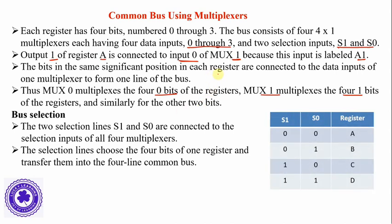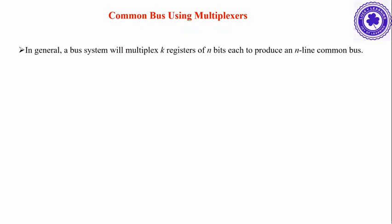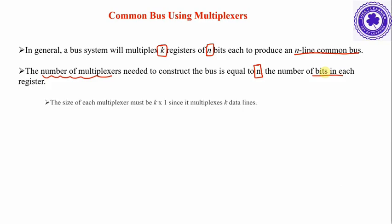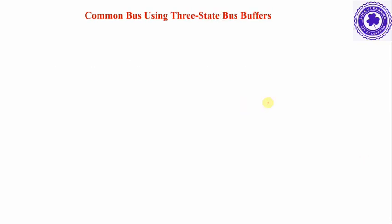In general, a bus system will multiplex k registers of n bits each to produce an n-line common bus. The number of multiplexers needed to construct the bus equals n, the number of bits in each register. The size of each multiplexer must be k-by-1, since it multiplexes k data lines.